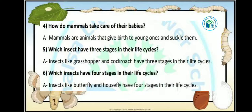Let's see the next question: which insects have three stages in their life cycles? कौन से ऐसे insects हैं कि जिनकी life cycle के three stages होते हैं? Insects like grasshopper and cockroach have three stages in their life cycle. Which insects have four stages in their life cycle? Insects like butterfly and housefly have four stages in their life cycle. Butterfly, housefly, mosquito — ये सारे insects के life cycle के four stages होते हैं.